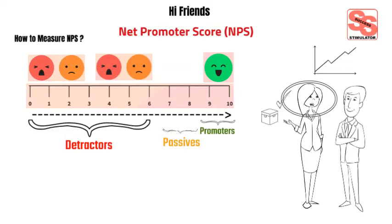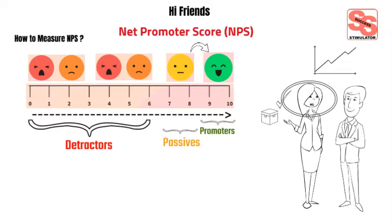Passives, with a score of 7 or 8, are not actively recommending a brand. Passives are very close to being promoters, particularly when they give a score of 8, so it always makes strategic sense to spend time investigating what to do to win them over. They are not included in the NPS calculation.